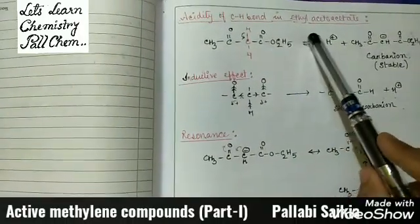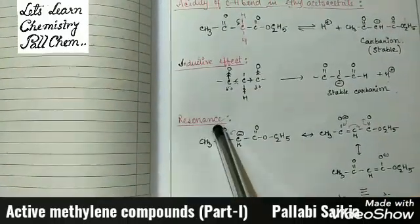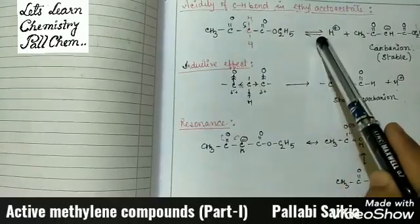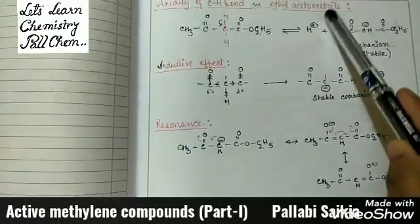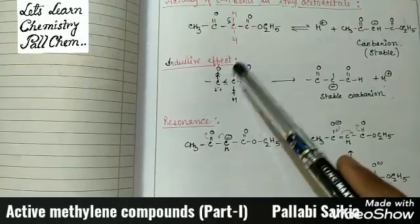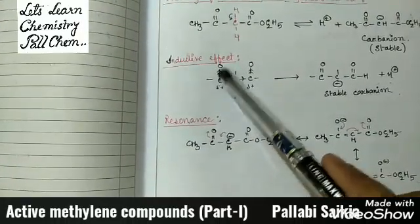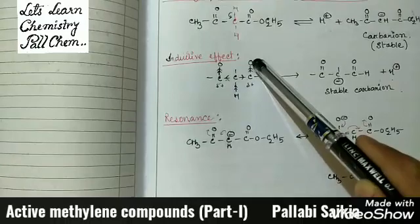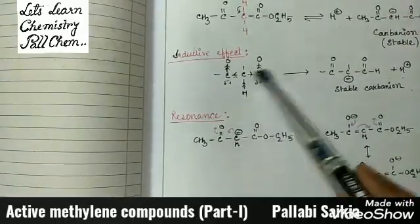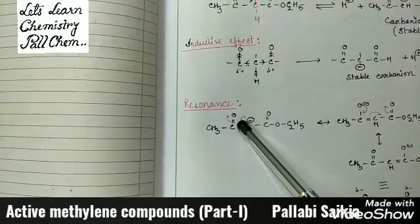The acidity of the CH bond in ethyl acetoacetate can be explained from two factors: inductive effect and resonance effect. This CH2 carbon-hydrogen bond is highly acidic because after losing the proton it can form a carbanion which is quite stable. From the inductive effect, the CH2 group is attached with two electron withdrawing species, since electrons are withdrawn by the highly polar C=O bond, so after losing this proton the carbanion is highly stabilized by inductive effect.